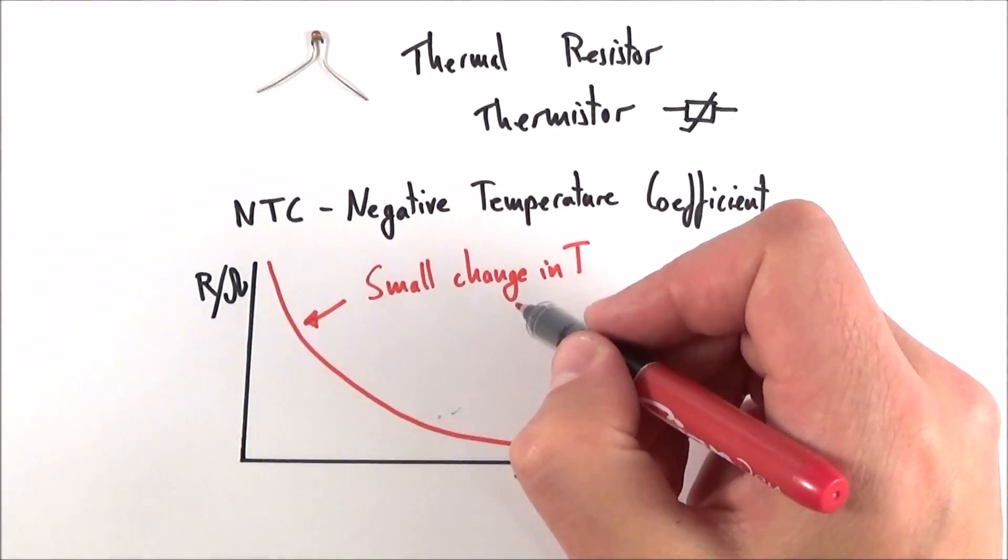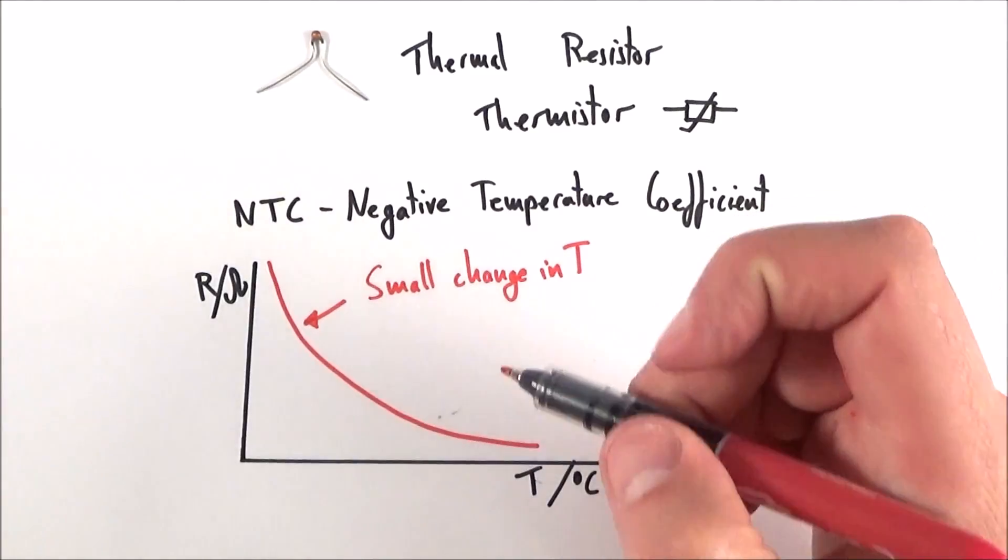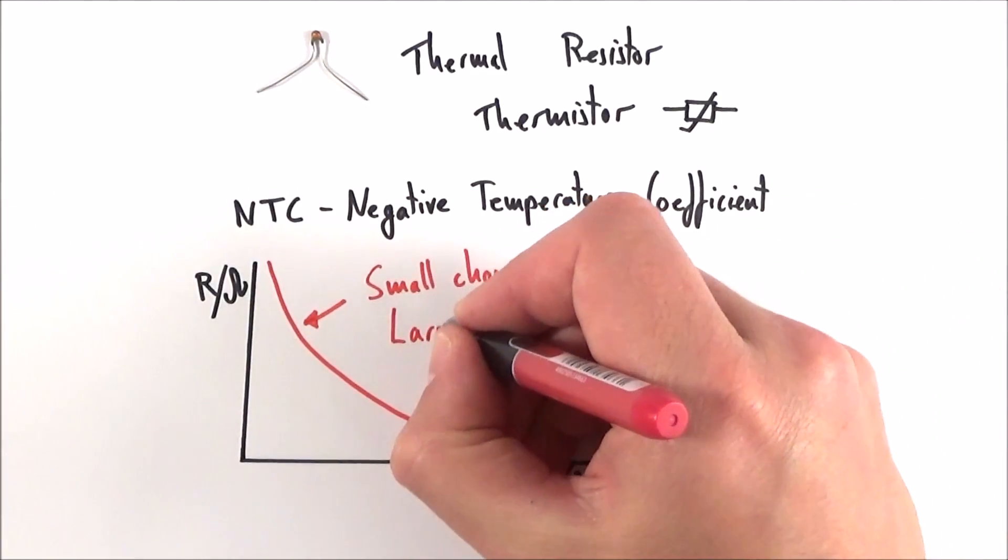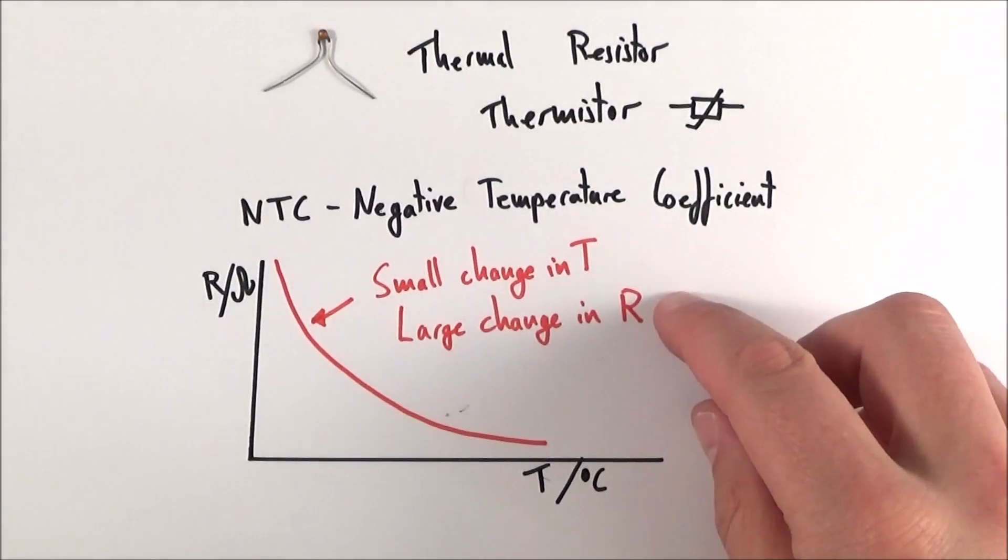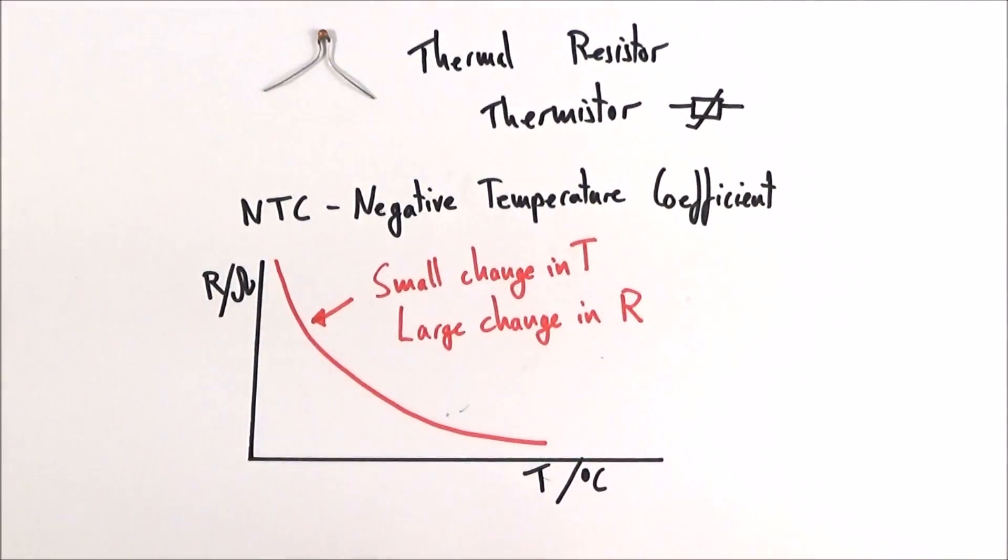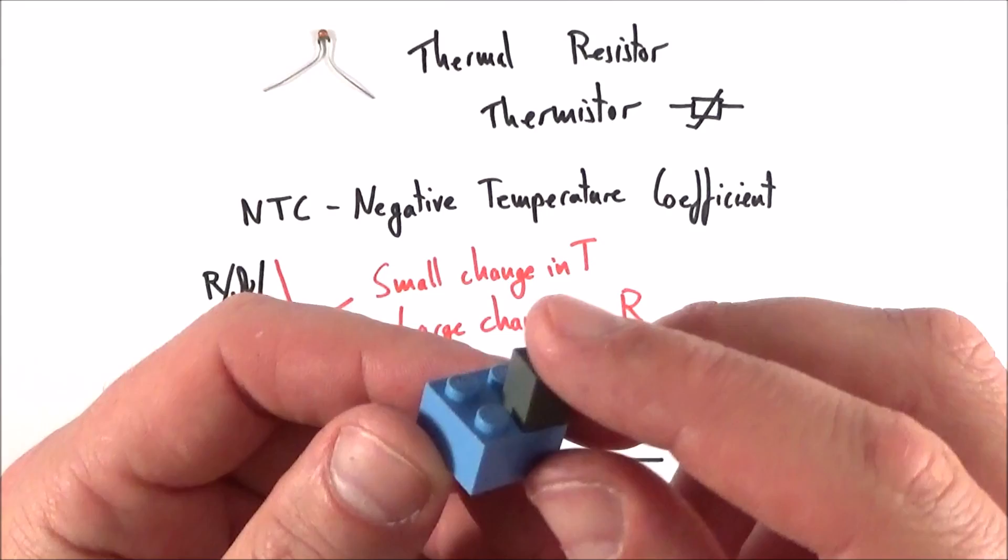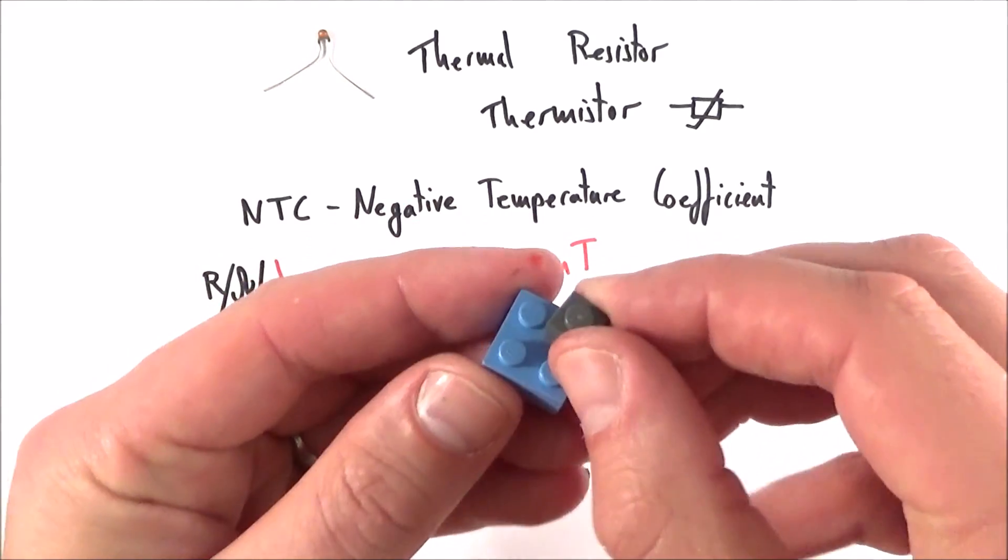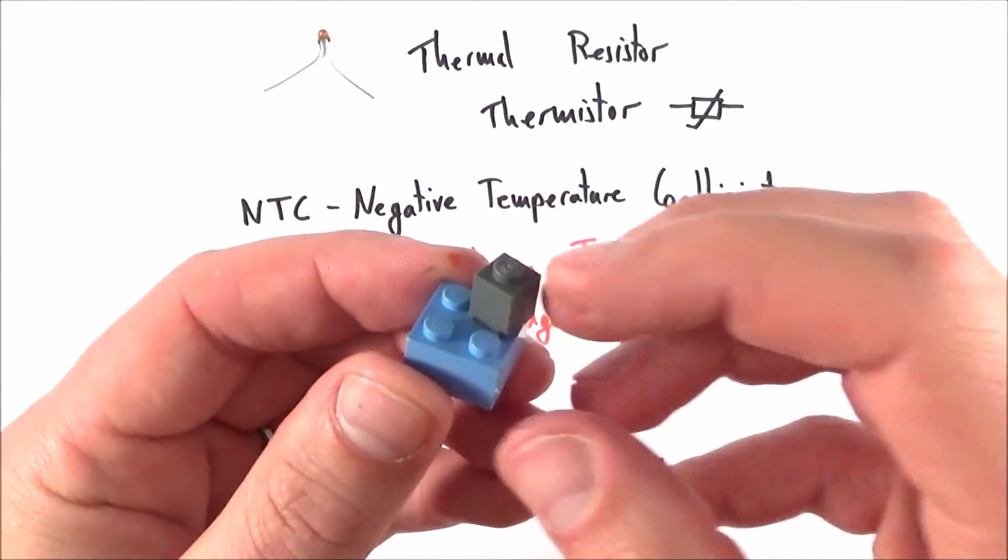Because we have this large change in resistance, it's useful in many applications. How does it do this? Well, it's because it's a semiconductor. What we have is that all the charge carriers are kind of locked within the material.